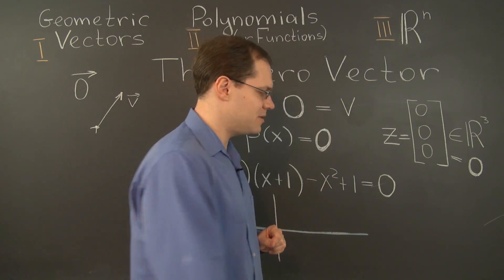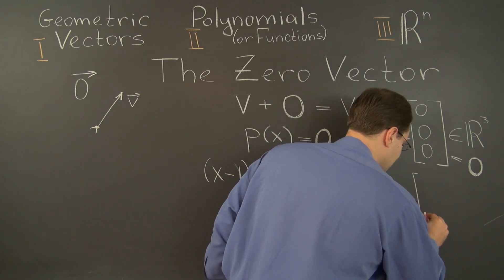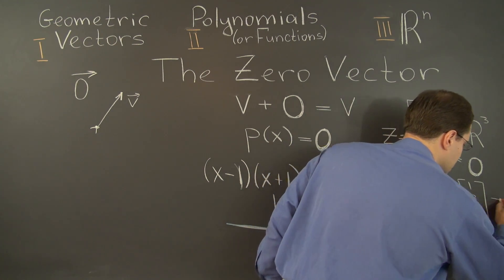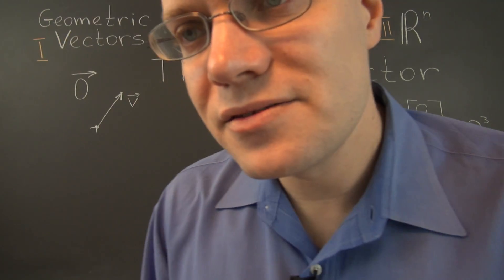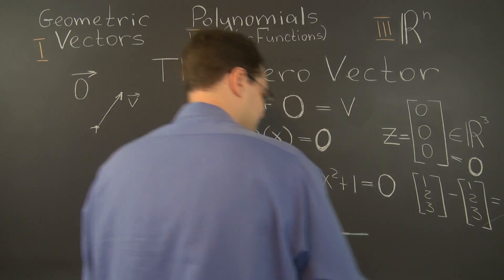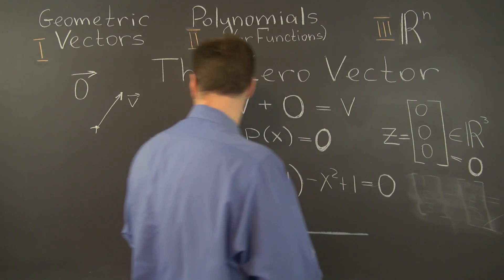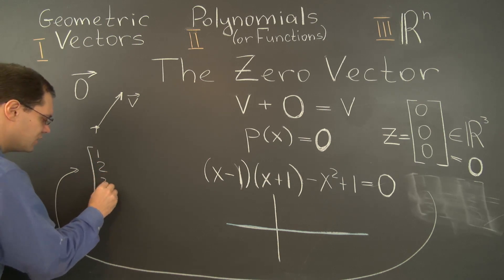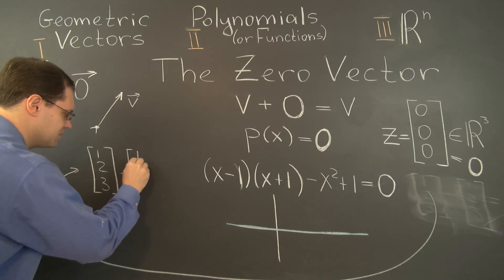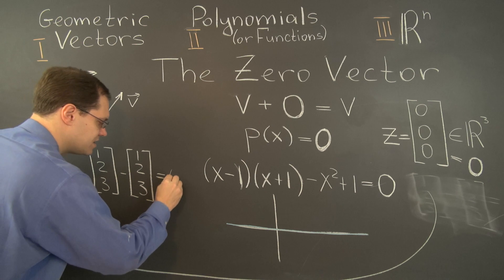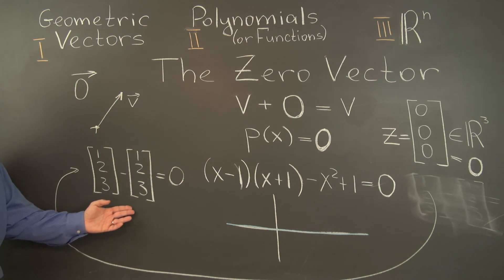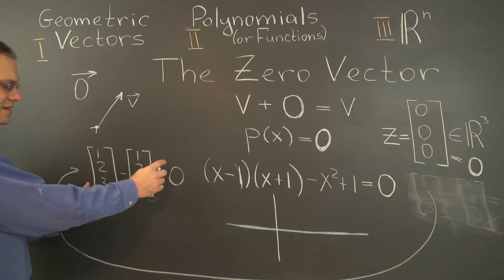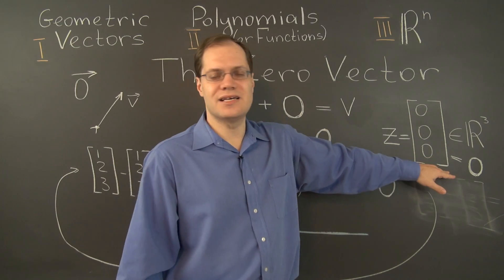In the case of R^n, you might have an expression like this: [1,2,3] - [1,2,3]. Let me move this incredibly difficult calculation over here. There are two ways to write down the answer to this calculation. You can write down [0,0,0] or you can simply write 0, meaning this vector minus this vector equals the zero vector. This is a perfectly good vector identity as long as you remember that this symbol represents this vector.